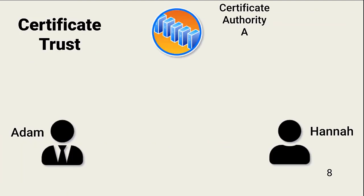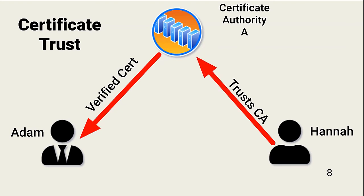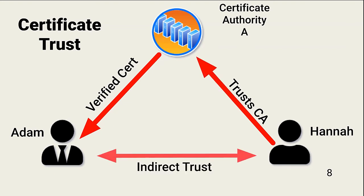Certificates enable entities to trust each other regardless of location or whether human or technology. For example, Adam has a certificate issued by certificate authority A. Hannah also trusts that CA. Because of the trust, Hannah will trust Adam when he presents his certificate and she validates it.